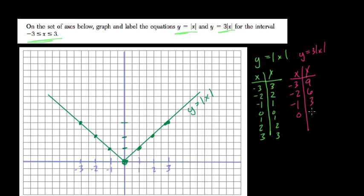0 times 3 is 3... wait, 0 times 3 is 0. 1 times 3 is 3, 2 times 3 is 6 because the absolute value of 2 is still 2, and 3 times 3 is 9. So we get a very similar kind of function here.